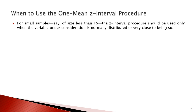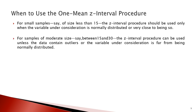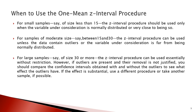For small samples of size less than 15, the Z-interval procedure should be used only when the variable under consideration is normally distributed or very close to being so. For samples of moderate size between 15 and 30, the Z-interval procedure can be used unless the data contain outliers or the variable is far from being normally distributed.